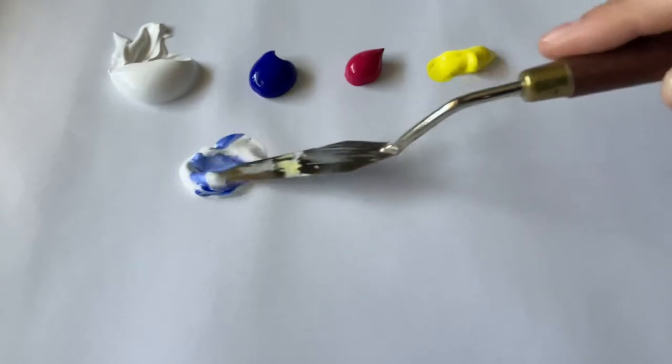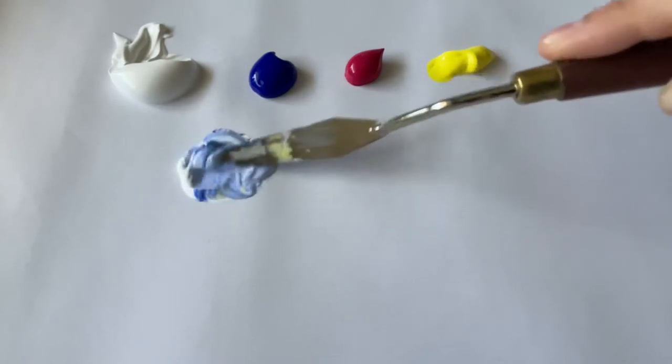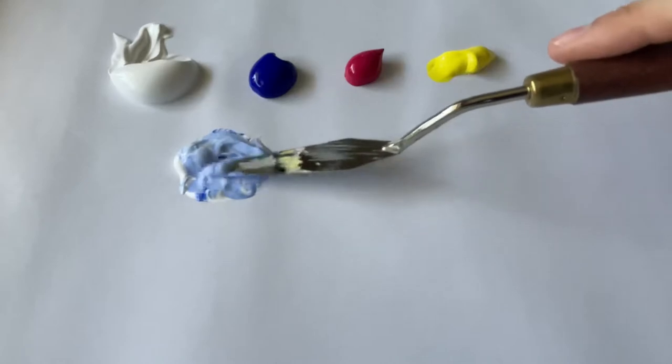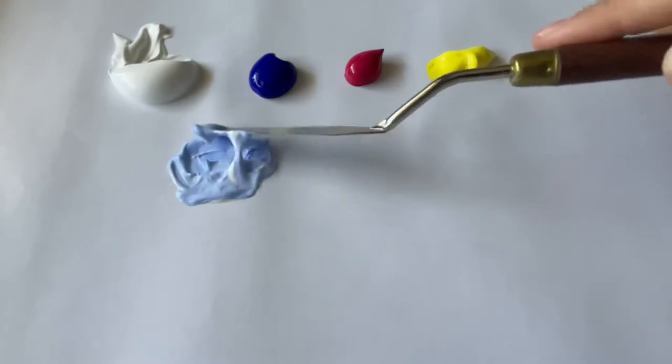So we're starting off mixing some light blue. You'll notice that I put down the white first, and then I added a small amount of blue to it. When it comes to mixing light colors, it's easier to go darker than it is to go lighter. So that's why I start with the white base and then add blue to it.